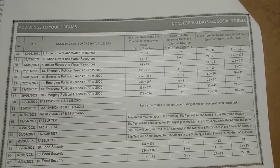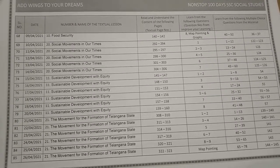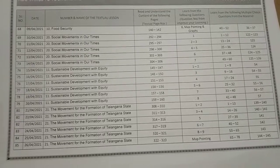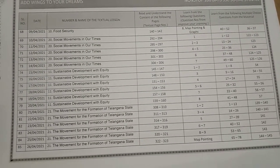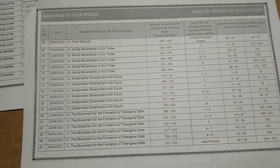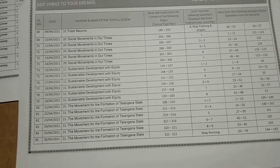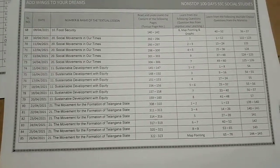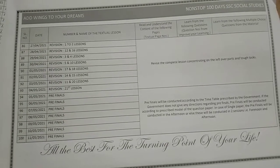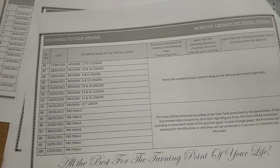After completion of the FA-2 Slip Test, we have a 3-day session for 'Food Security'. Then from 10th April 2021, lesson number 20 for 5 days. After that, from 15th April 2021, we have lesson 11, 'Sustainable Development with Equality'. Then lesson 21, 'The Momentum for the Formation of Telangana State' — from this lesson, most of the marks are going to be asked this year also. From 27th March 2021, we have revision and Free Finals.